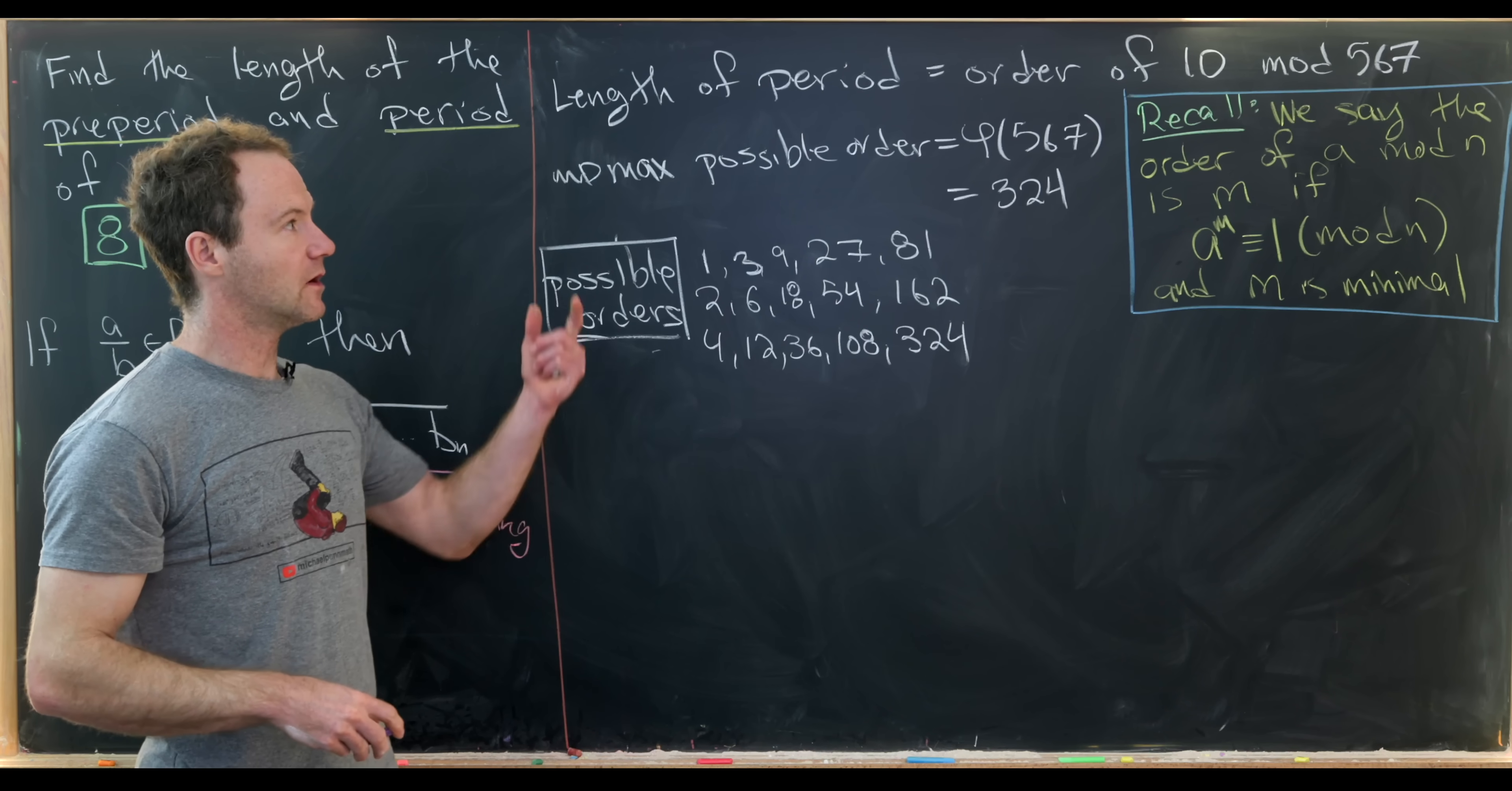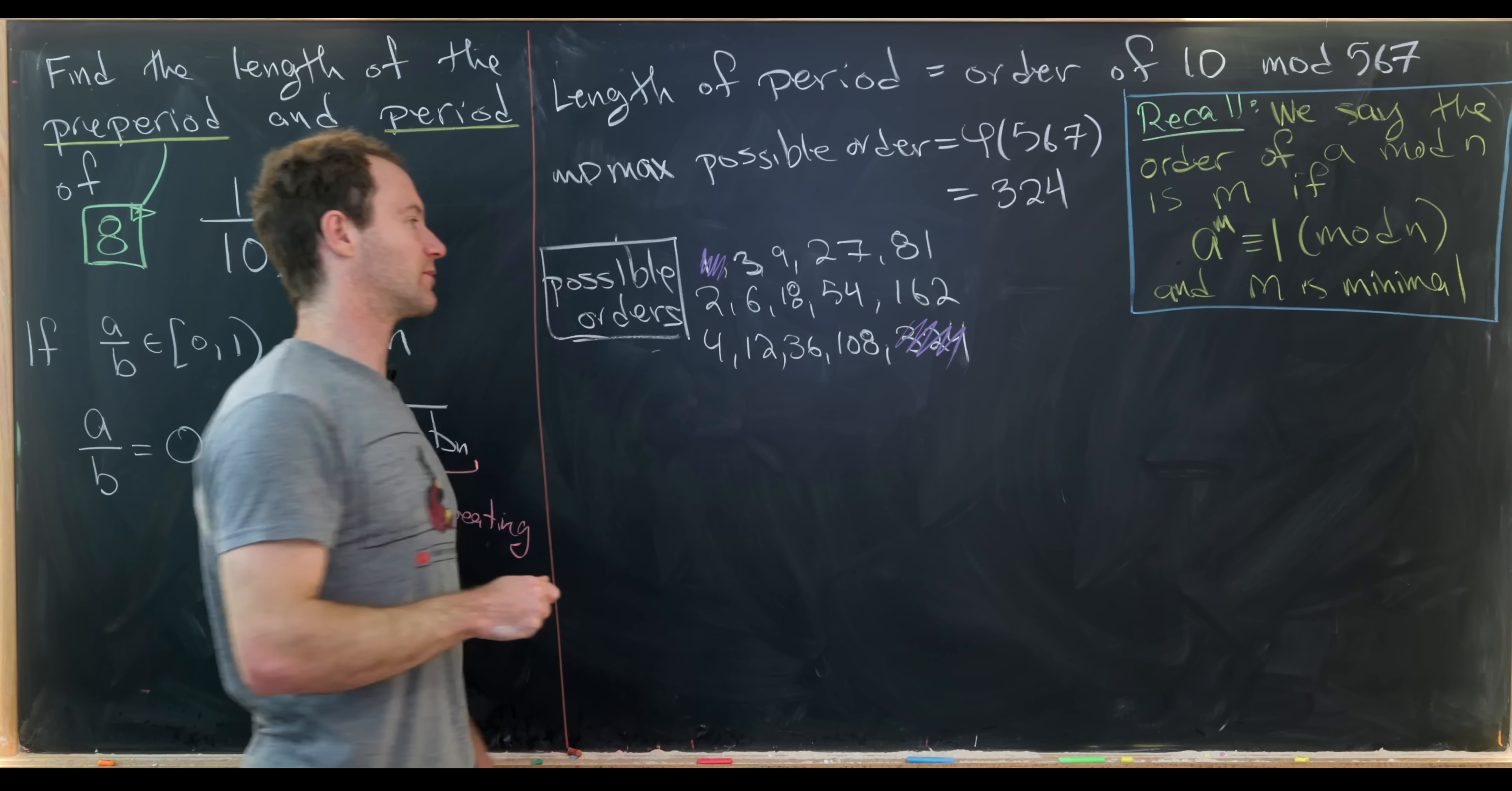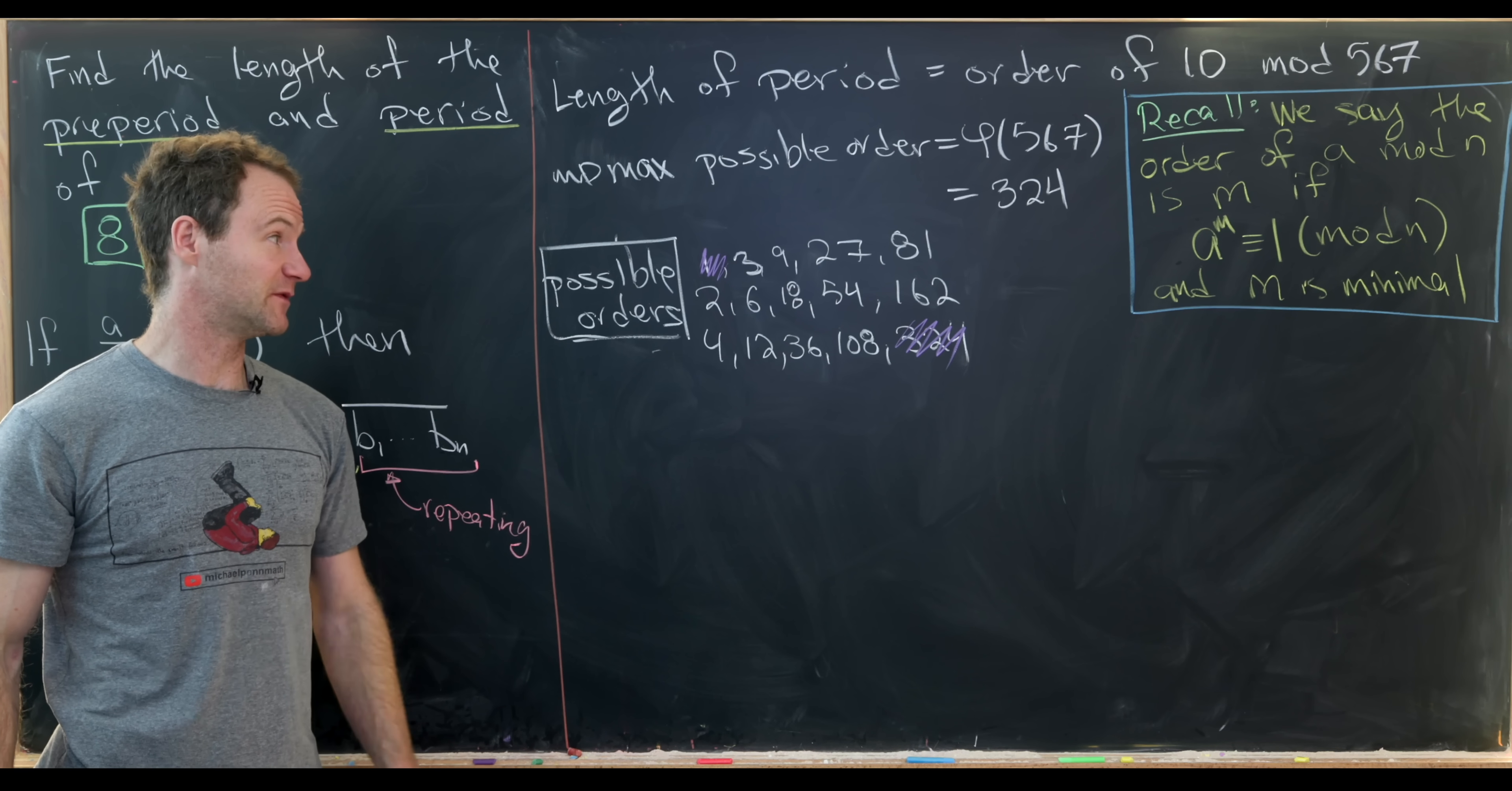But we know that there are no primitive roots mod 567. So we can actually never achieve this maximum possible order. So this 324 is not possible. Furthermore, this number 1 is also not possible because 10 to the 1 is not 1 mod 567.